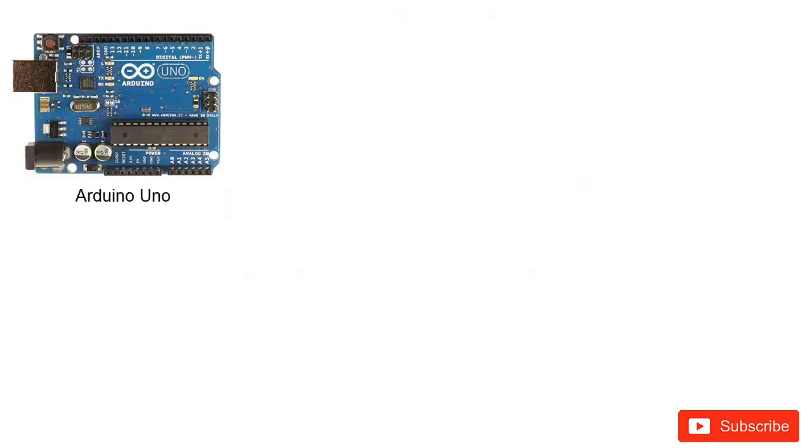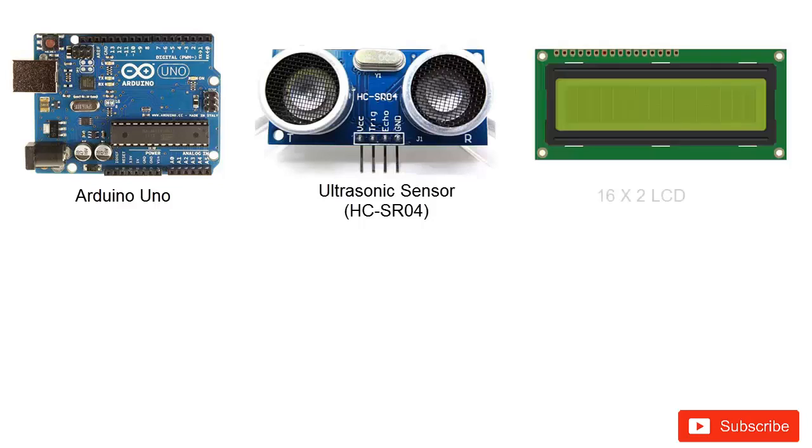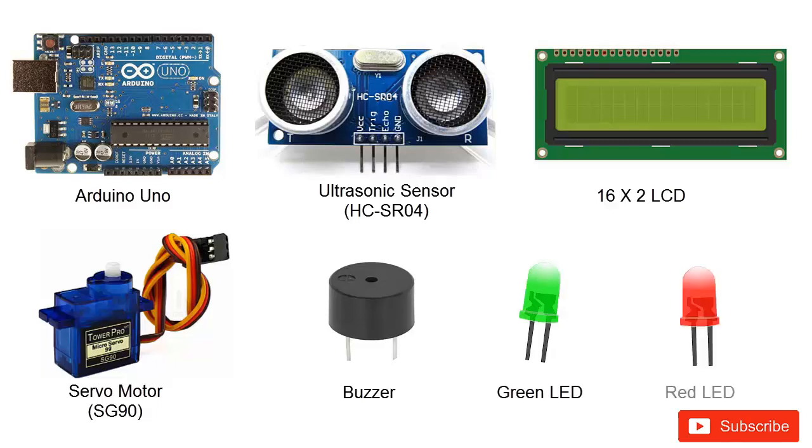For this we need Arduino Uno board, we need an ultrasonic sensor HC-SR04 with TX and RX, we need a 16x2 LCD for displaying, a servo motor that will rotate the ultrasonic sensor, a buzzer for indicating when an object is detected, and a green LED and a red LED for direction sensing.